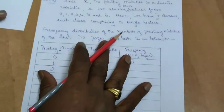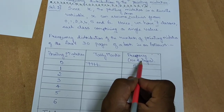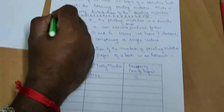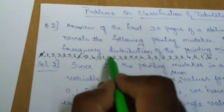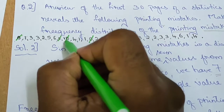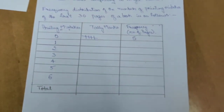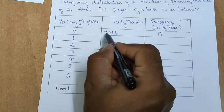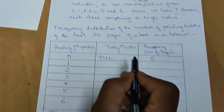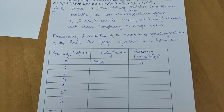Now let us identify how many pages there are with how many mistakes. For 0 mistakes, let us identify: counting the zeros — 1, 2, 3, 4, and 5 — this is called tally marks. So totally there are 5 pages with 0 mistakes.